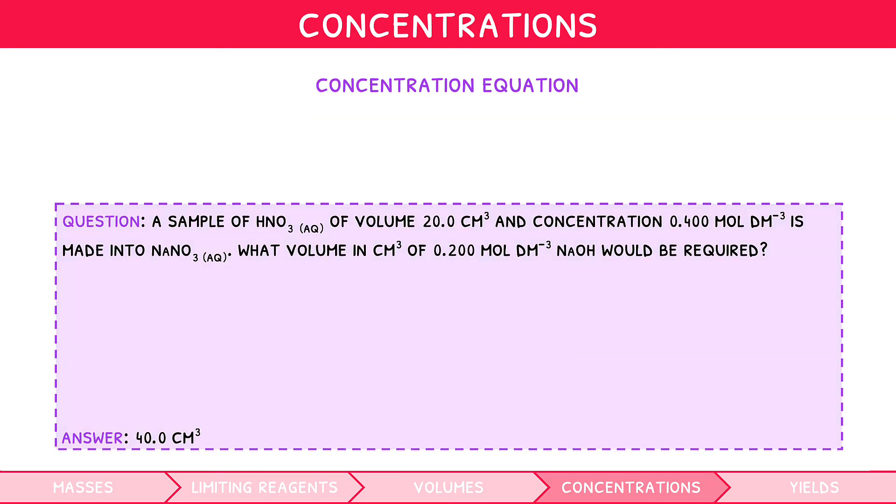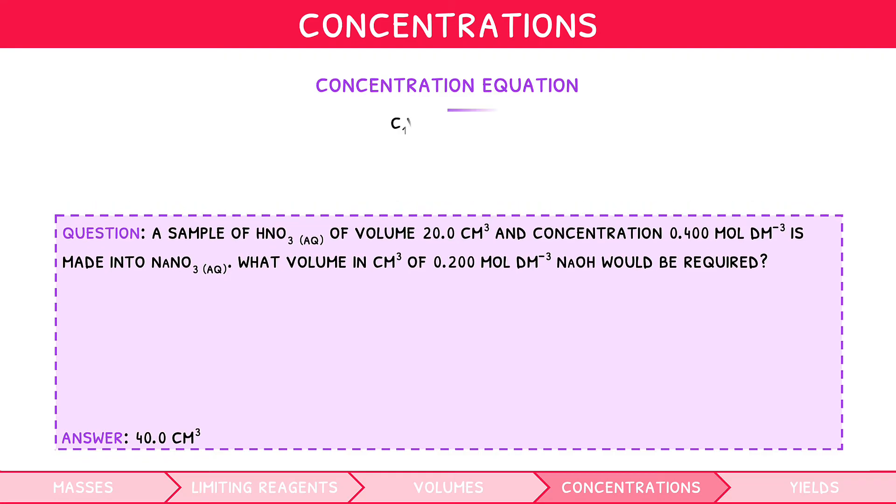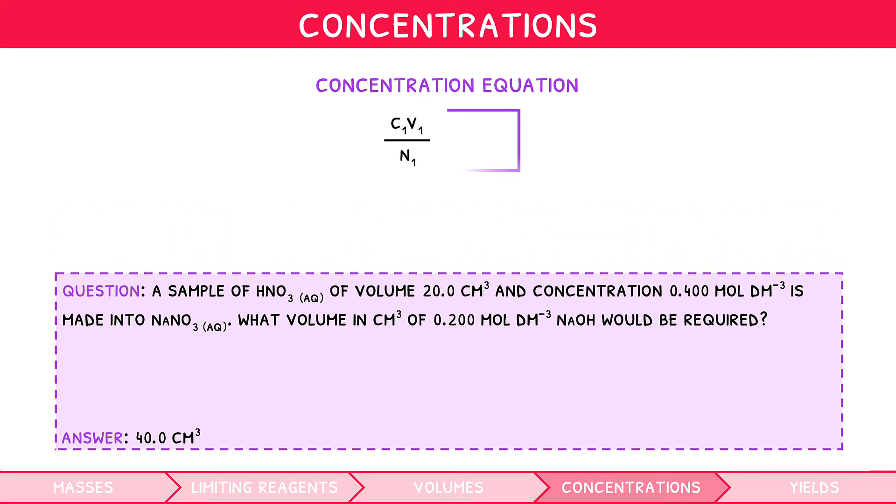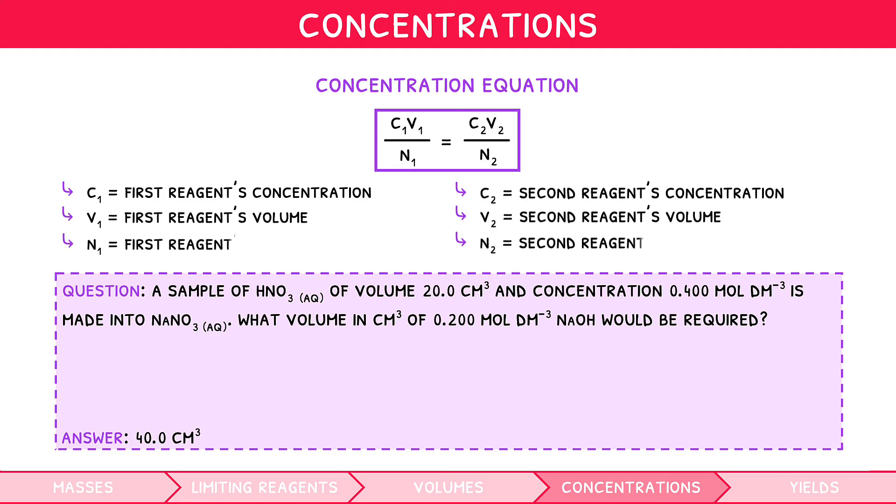However, there is a neat equation that can make these questions easier. It is C1 times V1 over N1 equals C2 times V2 over N2. Here, C stands for concentration, V for volume, and N for the coefficient of each reagent. The key difference here is that the units for concentration and volume can be anything, as long as they are the same on both sides of the equation. So, after some rearranging, we can see the answer would be 40, much quicker.